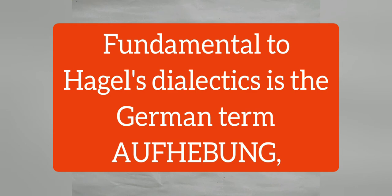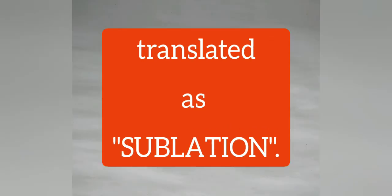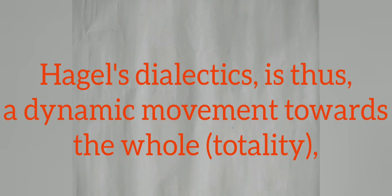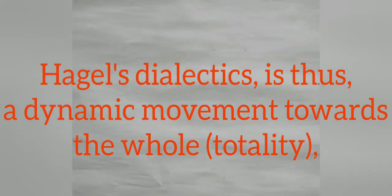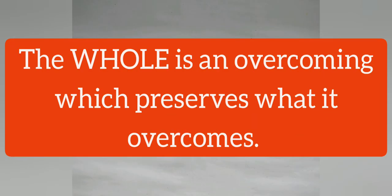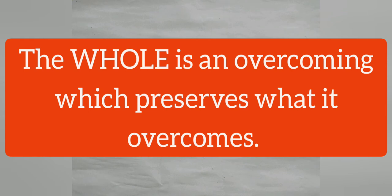Number 2: Fundamental to Hegel's dialectics is the German term Aufhebung, translated as Sublation. This Aufhebung, says Hegel, has a double meaning — that is, both to cancel or negate and to preserve at the same time. Hegel's dialectic is thus a dynamic movement towards the whole, that is, totality, where nothing is lost or destroyed, but preserves what it overcomes. The whole is an overcoming which preserves what it overcomes.